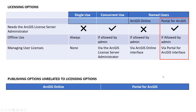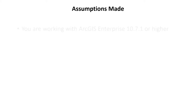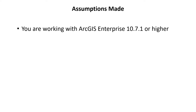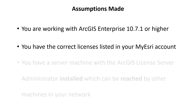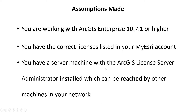Before we go ahead with the steps I want to make a couple of assumptions known. With this demo I will be assuming that you are working with ArcGIS Enterprise 10.7.1 or higher, as at earlier versions things were slightly different. I will also assume that you have the correct licenses listed in your My Esri account. If things in My Esri are not correct, please contact our customer care team at Esri Canada. And last but not least, that you have a server machine with the ArcGIS licensed server administrator installed which can be reached by other machines in your network.